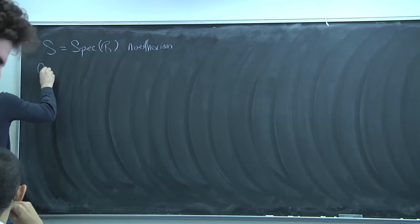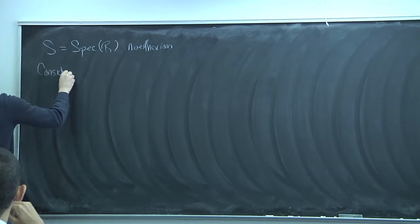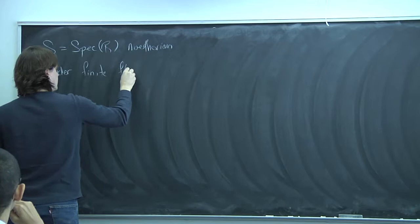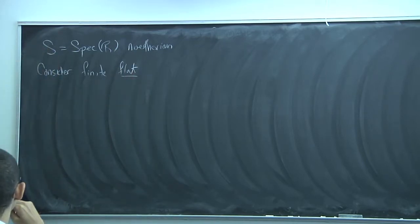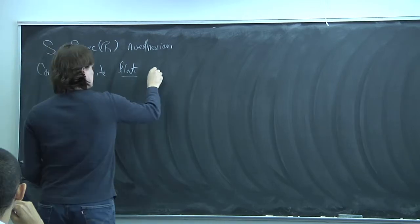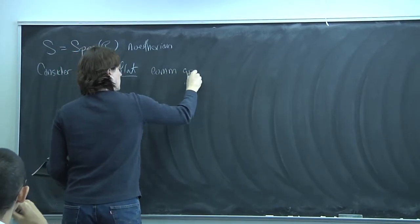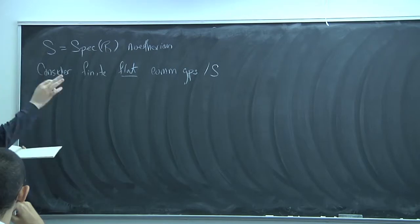We're going to consider finite flat group schemes. We didn't need to say flat before when working over a field, but now it's very important to say flat. So finite flat unitary group schemes over S — whenever I say group scheme over S, I'm going to mean finite flat.